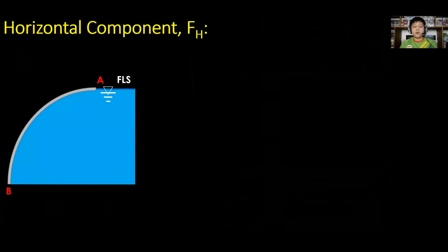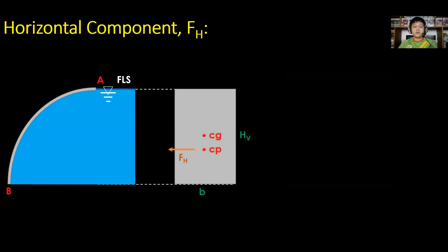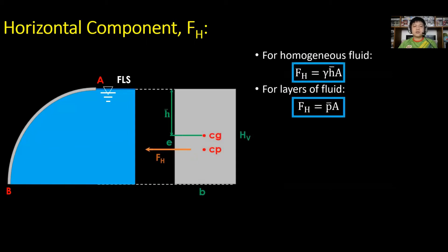For the horizontal component F sub H, consider the two-dimensional projected surface. For homogenous fluid, F sub H is equal to gamma times h-bar times A. While for layers of fluids, F sub H is equal to P-bar times A, where gamma is the unit weight of fluid, h-bar is the vertical distance from the center of gravity to the free liquid surface, and A is the area of the projected surface.